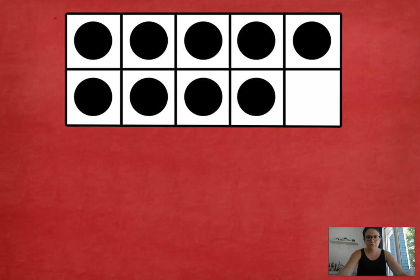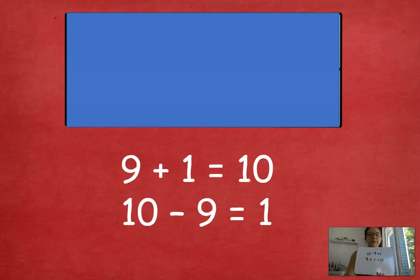Next one. Go. One subtraction, one addition. Ready? These are mine. I saw 9 dots on top. Let's see. 9 plus 1 equals 10, 10 minus 9 equals 1.